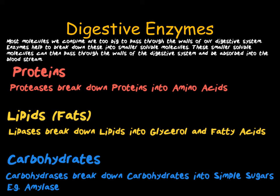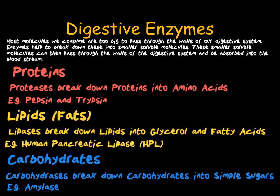Some enzymes do not have an optimum pH of 7. Two good examples are pepsin and trypsin — both proteases. Pepsin has an optimum pH of 2, as it is found in the stomach, whereas trypsin has an optimum pH of 6.8, as it is found in the small intestine. The main lipase in your body is human pancreatic lipase, or HPL. Some digestive enzymes work by joining together smaller components to make larger molecules — for example, glycogen synthase joins chains of glucose molecules to make glycogen, allowing the body to store glycogen.